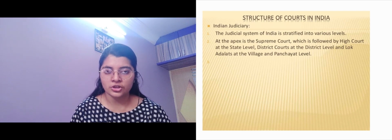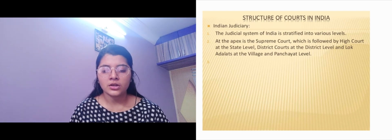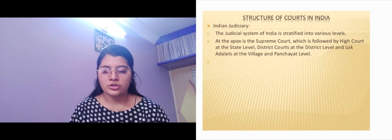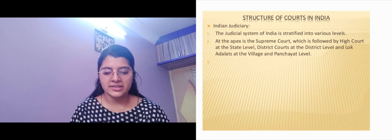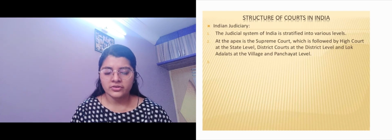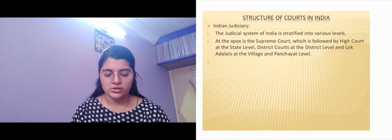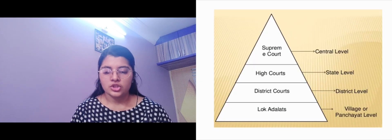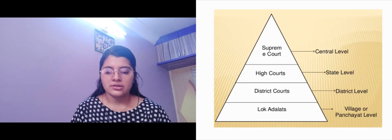So what is the structure of courts? The judicial system of India is stratified, that is, it is divided into various levels. At the top we have the Supreme Court, followed by the High Court, then district courts, and then the Lok Adalats which are there at the panchayat or village level. So this is the structure: Supreme Court, High Court, district court, and Lok Adalats.